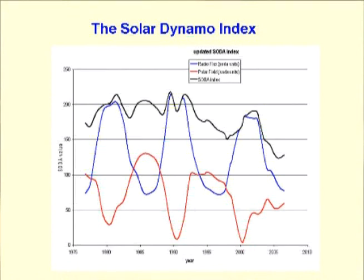The black line sums the polar and toroidal magnetic field strength. This has been in downtrend since the early 1990s. This downtrend means that there is much less magnetic force available to make sunspots, so that solar cycle 24 will be much weaker than solar cycle 23.